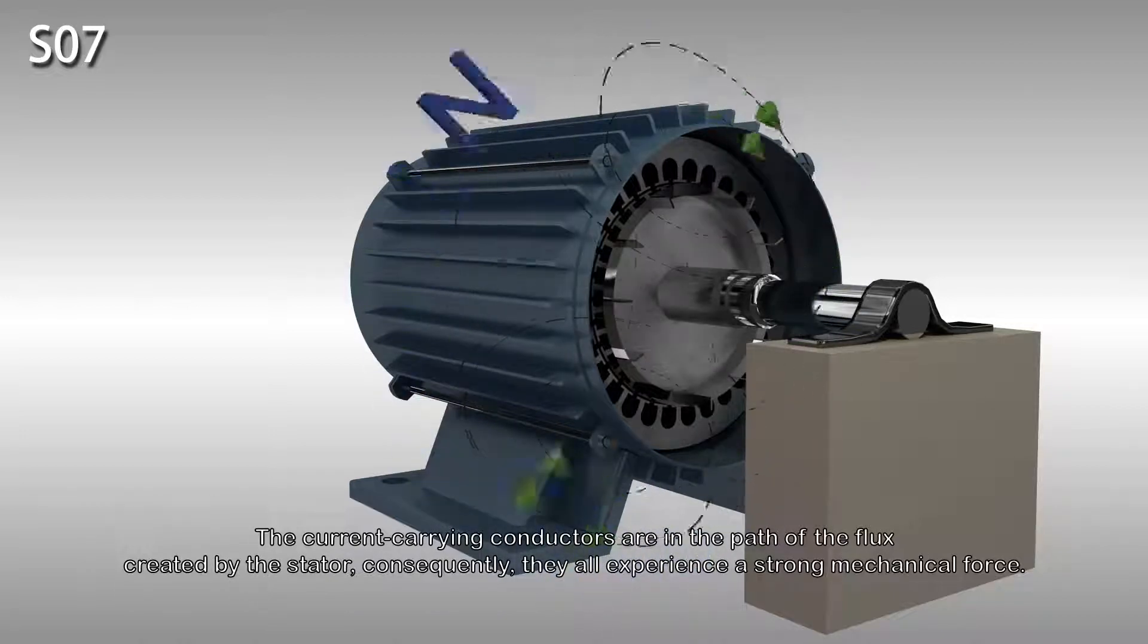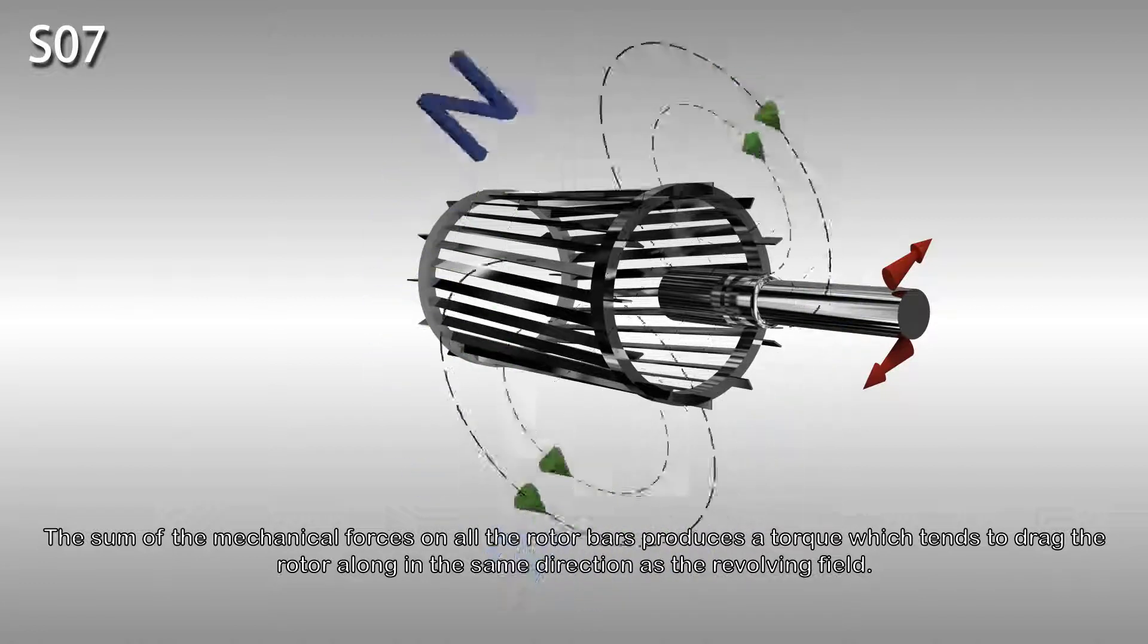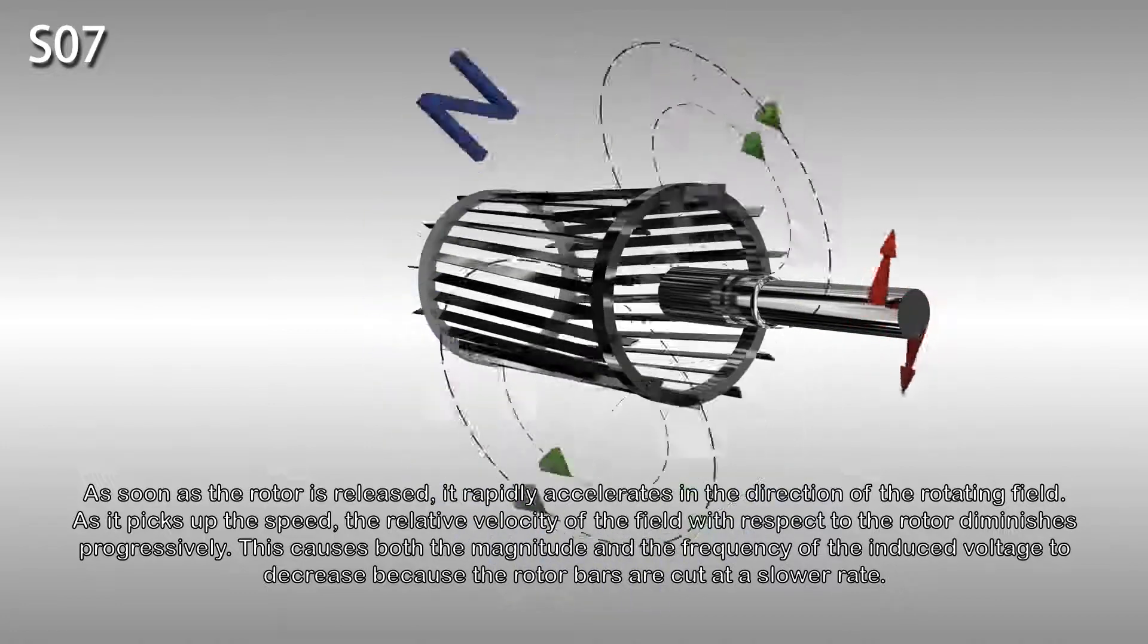The current-carrying conductors are in the path of the flux created by the stator. Consequently, they all experience a strong mechanical force. The sum of the mechanical forces on all the rotor bars produces a torque which tends to drag the rotor along in the same direction as the revolving field.